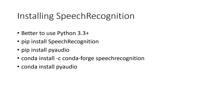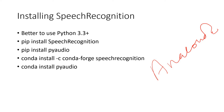You can install speech recognition — it is better to use Python 3.3 or a later version. You can use 'pip install speech_recognition' in your command prompt, and you can also install PyAudio. If you are using Anaconda, which is a good platform for Python and R and even for deployment, you can use 'conda install -c conda-forge speech_recognition'. For PyAudio you can use 'conda install pyaudio', which we will discuss in detail in the upcoming slides.